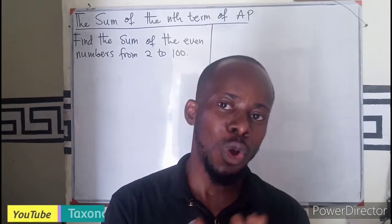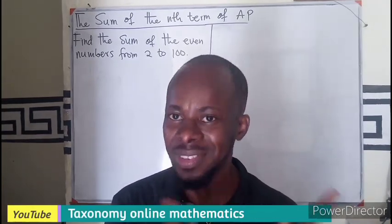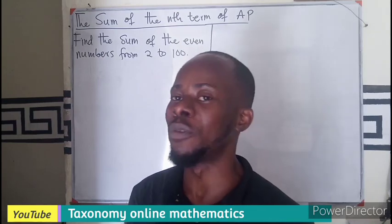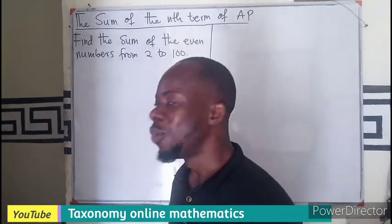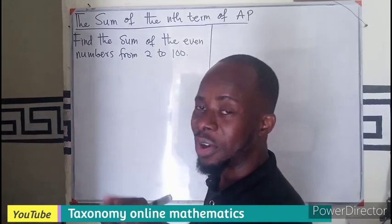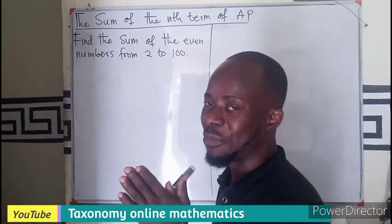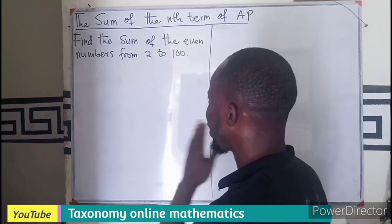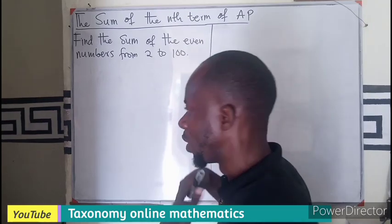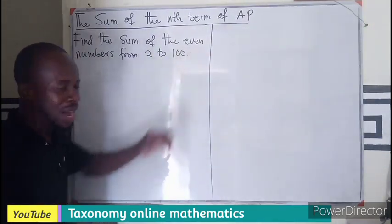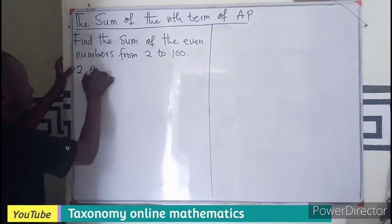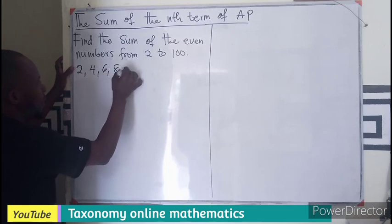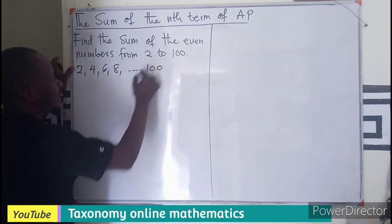So we are still continuing with our tutorial on sum of the first n terms of any arithmetic progression. This question asks to find the sum of all the even numbers from 2 to 100. Since we know it is even numbers, we can generate our sequence to be 2, 4, 6, 8 up to 100.